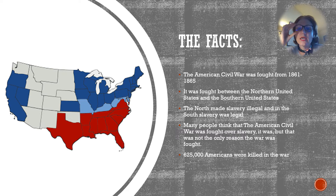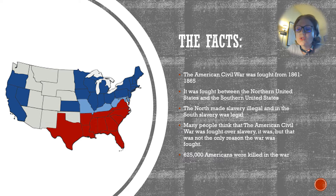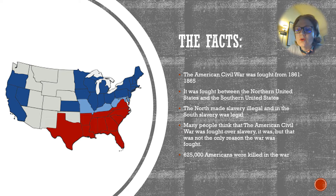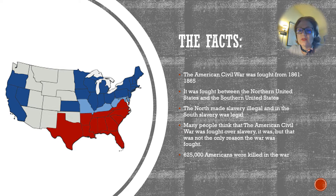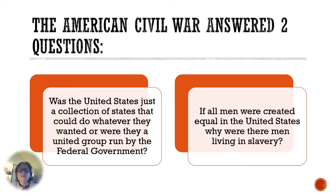The American Civil War was fought from 1861 to 1865. It was fought between the northern United States and the southern United States. If you look at the map on the side, you'll see the dark blue states — those were northern states and the red states were southern states. There are four light blue states in between the north and the south. Those were known as border states, and these four states had slavery but they refused to leave the Union. Many people think that the American Civil War was fought over slavery, and it was fought over slavery, but that was not the only reason the war was fought. In the end, 625,000 Americans were killed in the war.